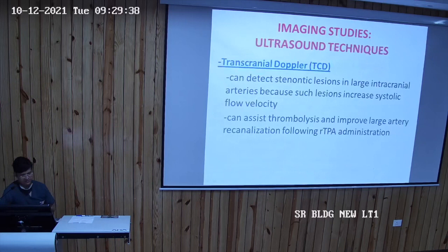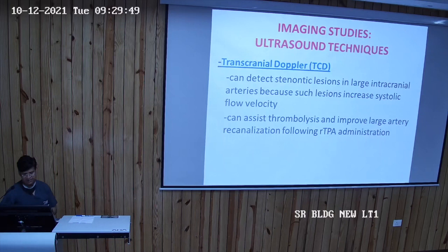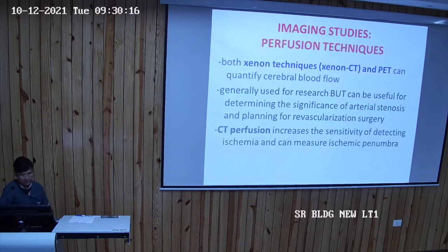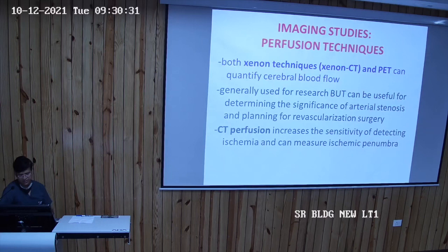Transcranial Doppler (TCD) can detect stenotic lesions in large intracranial arteries, as such lesions increase systolic flow velocity. It can also assist thrombolysis and improve large artery recanalization following tPA administration. Perfusion techniques such as xenon CT and PET can quantify cerebral blood flow; they are generally used for research but can be useful for determining the significance of arterial stenosis and planning revascularization surgery. CT perfusion increases sensitivity for detecting ischemia and can measure the ischemic penumbra.